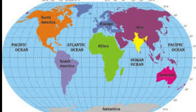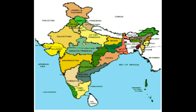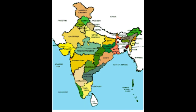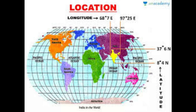The countries comprising the Indian subcontinent include Pakistan, Bangladesh, Nepal, and Bhutan. The neighboring countries separated by the Indian Ocean are Sri Lanka and Maldives. Now we are going to study about the location of India.